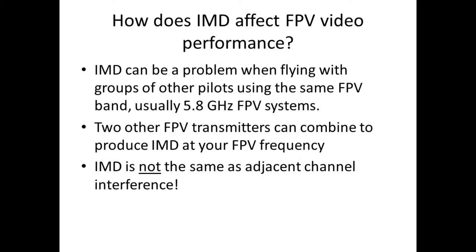IMD is generally not a problem for a single flyer flying by himself without other people in the same band. IMD can also be produced in transmitters; however, our testing has shown that most of the troubles that we see, if not all of them, are a result of problems in the receiver. These are deficiencies in the receiver that cause IMD to be a problem.